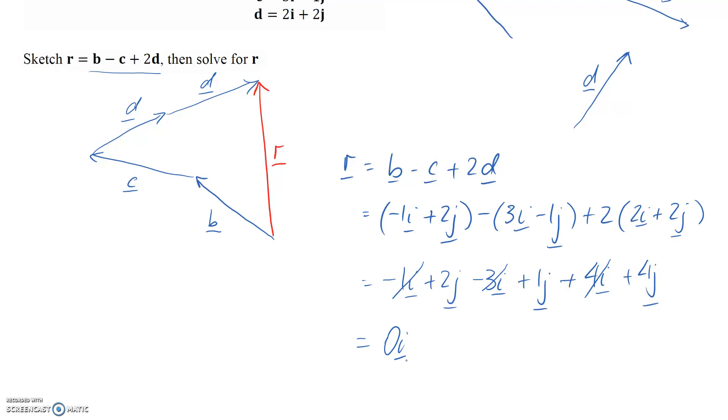And for the j's we have 2 plus 1 is 3, plus 4. That takes us to 7.